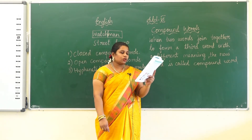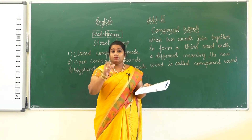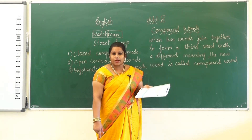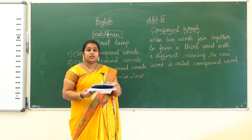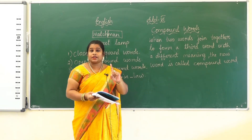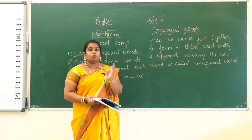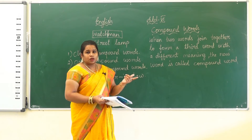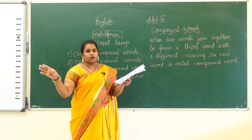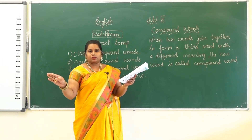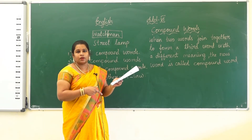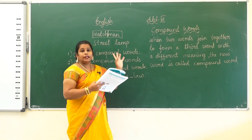Here are some examples for closed compound words. Afternoon — we write it together, not separate. After has a different meaning and noon has a different meaning; both combine and form a compound word. Next, firefly — fire means flame and fly means it can fly. Both have different meanings and combine to form a different meaning, so firefly is a closed compound word. We do not leave space between them.